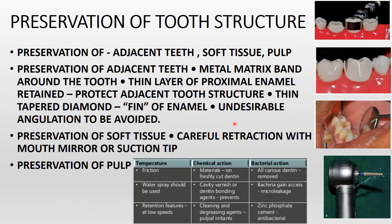You also have to avoid undesirable angulation that can damage the adjacent tooth. For preservation of soft tissue, carefully retract the tongue using a mouth mirror or suction tip. For preservation of the pulp, excessive temperature from using the micromotor or air rotor generates heat, and bacterial and chemical actions can also damage the pulp. You can use a water spray to protect from excessive heat. For chemical action, apply a cavity varnish, and for bacterial protection, use zinc phosphate cement.